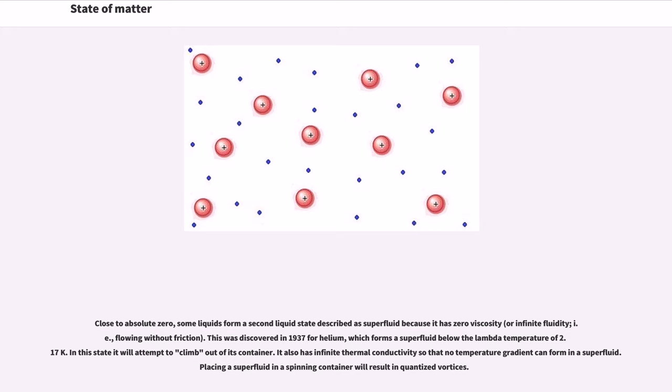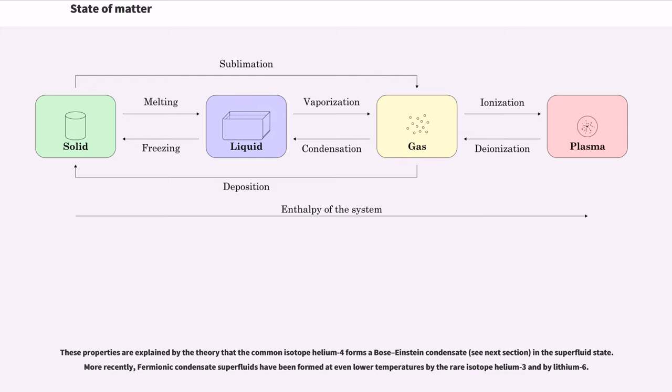Close to absolute zero, some liquids form a second liquid state described as superfluid because it has zero viscosity, or infinite fluidity, i.e., flowing without friction. This was discovered in 1937 for helium, which forms a superfluid below the lambda temperature of 2.17 K. In this state it will attempt to climb out of its container. It also has infinite thermal conductivity so that no temperature gradient can form in a superfluid. Placing a superfluid in a spinning container will result in quantized vortices. These properties are explained by the theory that the common isotope helium-4 forms a Bose-Einstein condensate (see next section) in the superfluid state.